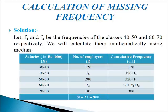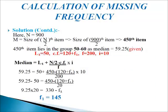So n equals 900, which is the number of observations, already given in the question. We calculate the median position: n by 2 equals 900 by 2, which is the 450th item. As seen in the previous table, the 450th item lies in the class interval 50 to 60. The median is already given in the question as 59.25. For the formula, L1 equals 50, which is the lower class interval of 50 to 60.